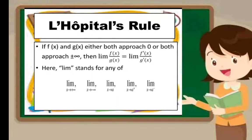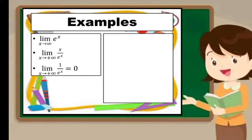So let's have this example: limit of e to the power of x as x approaches infinity. By L'Hôpital's, this will be the limit of x over e^x.